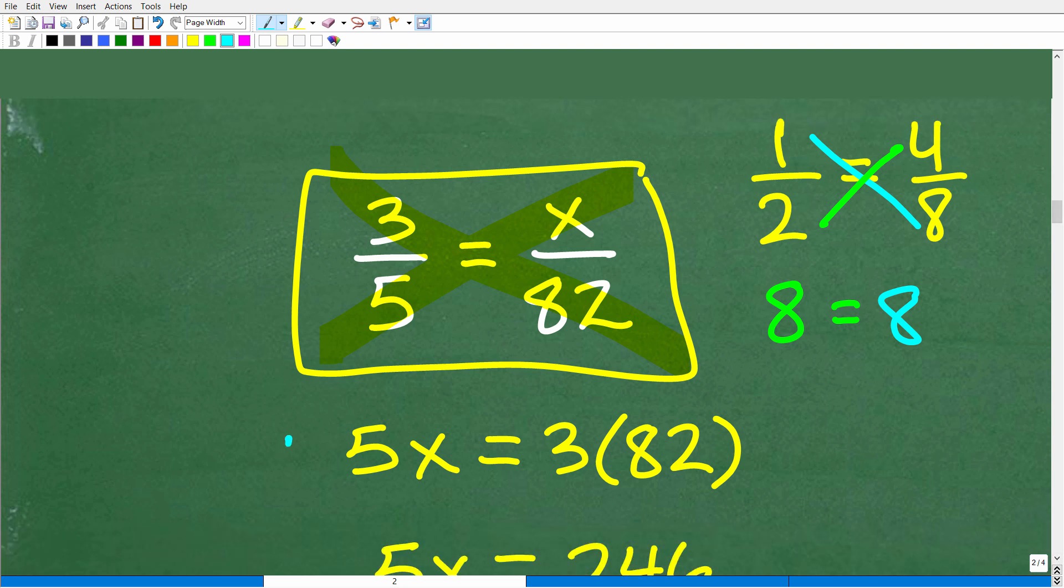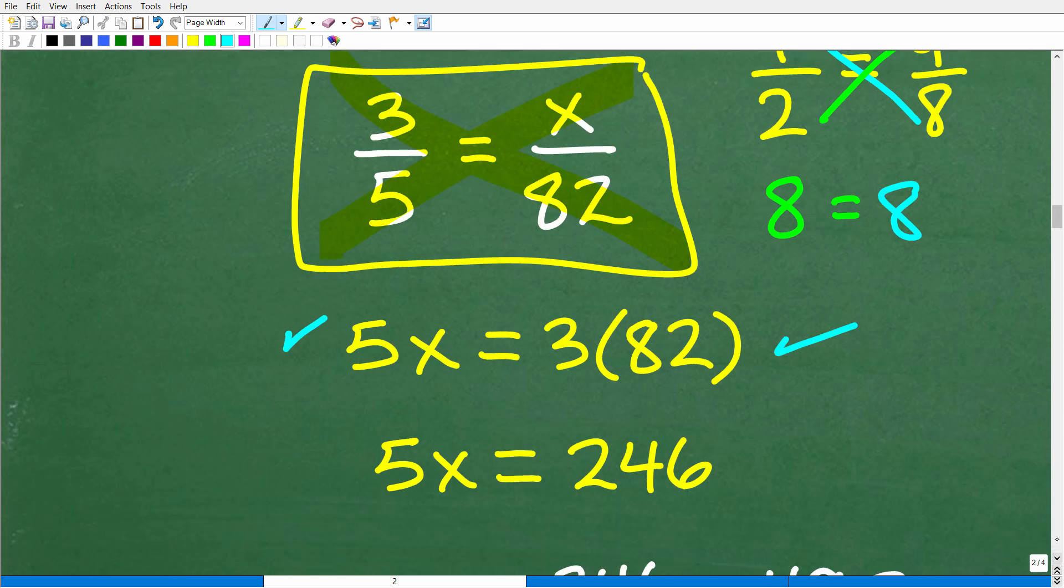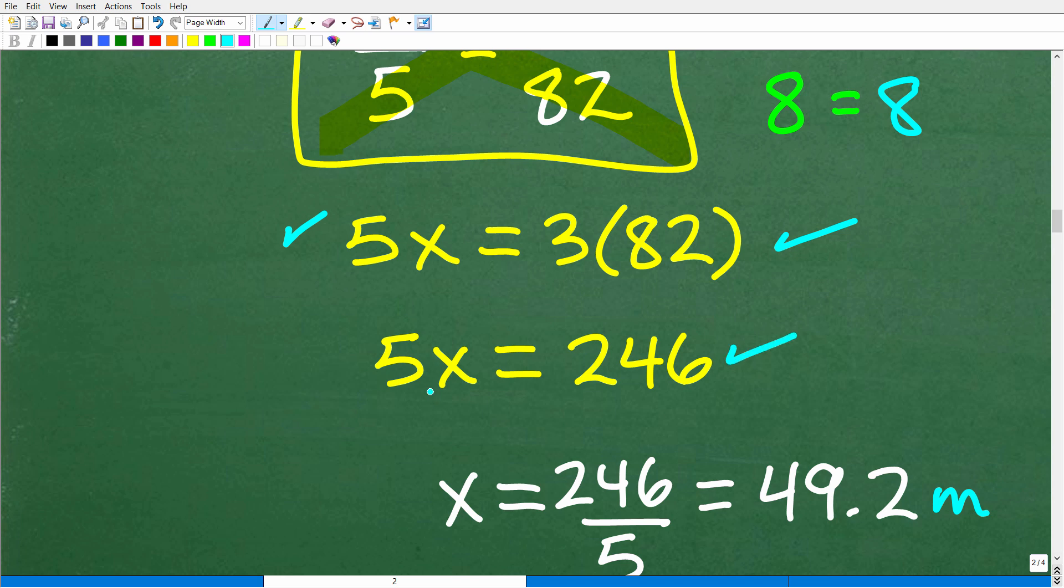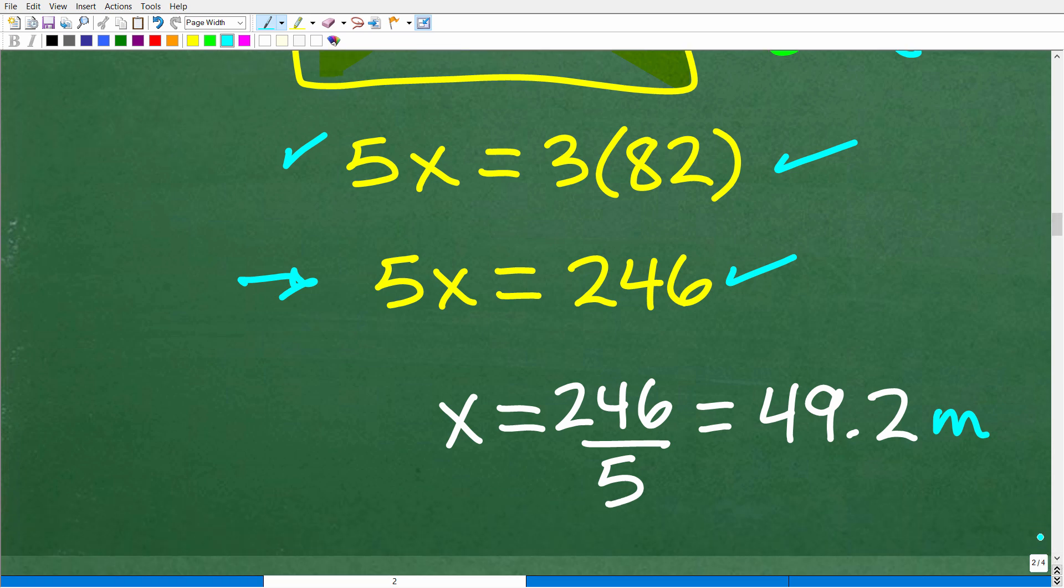5 times x is 5x. 3 times 82 is going to be 246. So now we have this basic linear equation. 5x is equal to 246. To solve for x, all we have to do is divide both sides of the equation by 5. So x will be equal to 246 divided by 5. And that will be 49.2.